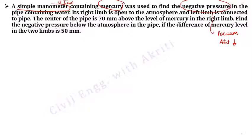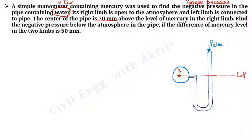The fluid in the pipe is water. Now let's draw the manometer. This is the center of the pipeline, with atmospheric pressure acting on the right limb. The center of pipe is 70 mm above the mercury level in the right limb — so going 70 mm below the center gives us the mercury level. The difference in mercury levels between the two limbs is 50 mm. So the distance from the center down to mercury in the right limb is 70 mm, and from that level, mercury in the left limb is 50 mm higher. The height from the mercury level down to the center of pipeline in water is 70 minus 50 equals 20 mm.